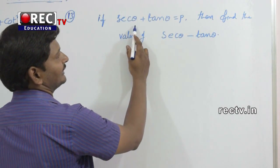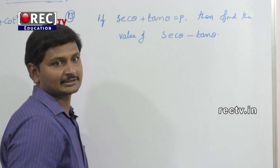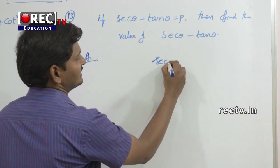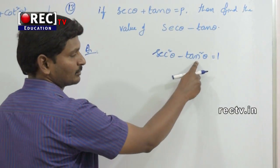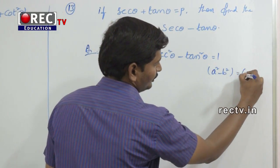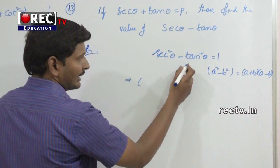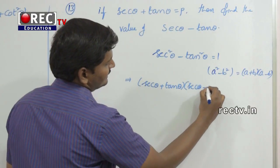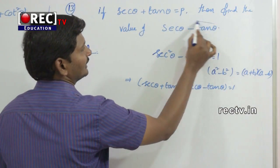Next question: if sec theta plus tan theta is equal to p, then find the value of sec theta minus tan theta. From the trigonometric identity, sec squared theta minus tan squared theta equals 1. Applying a squared minus b squared equals a plus b into a minus b, we get sec theta plus tan theta into sec theta minus tan theta equals 1.